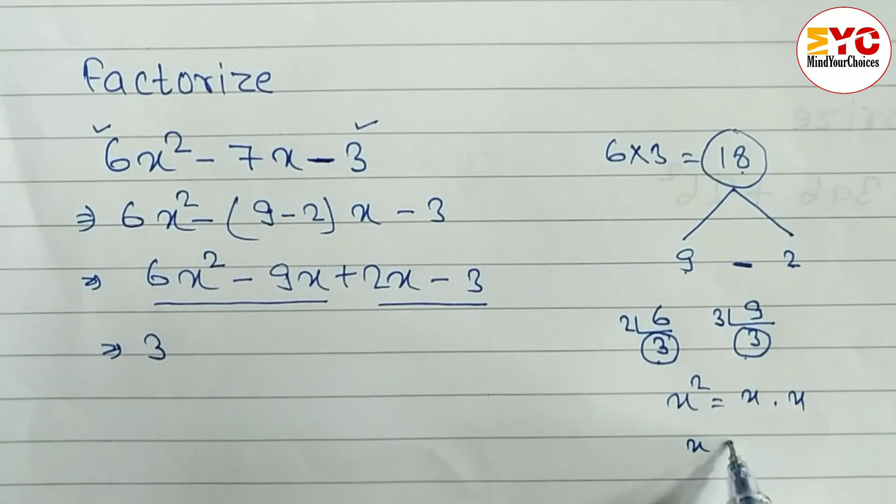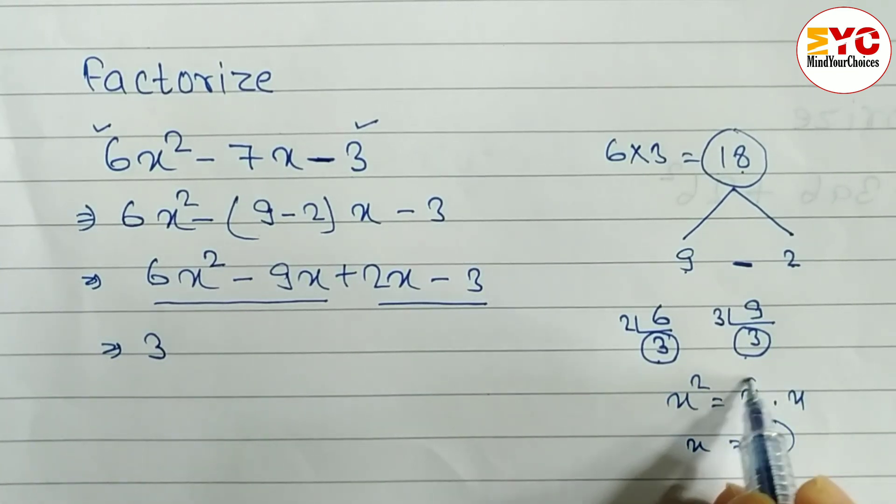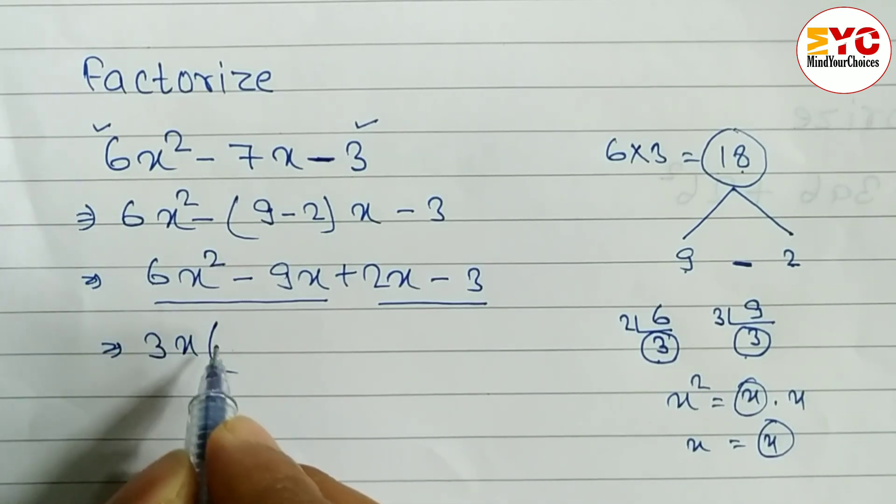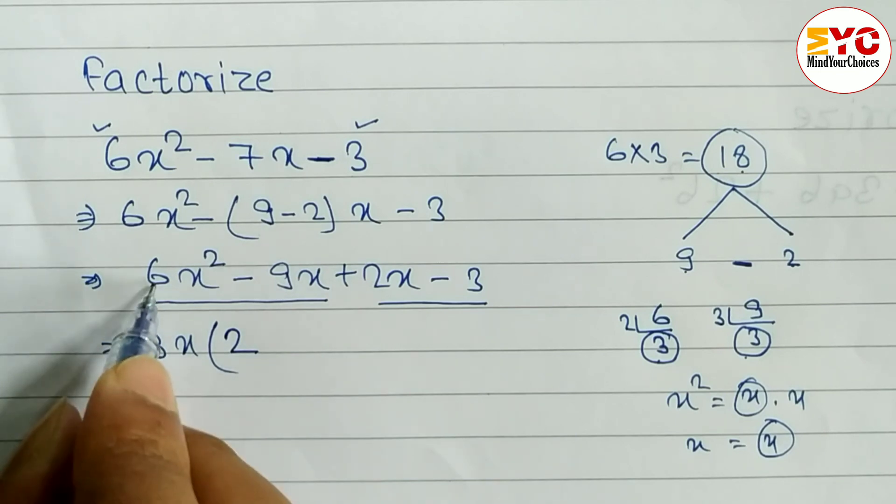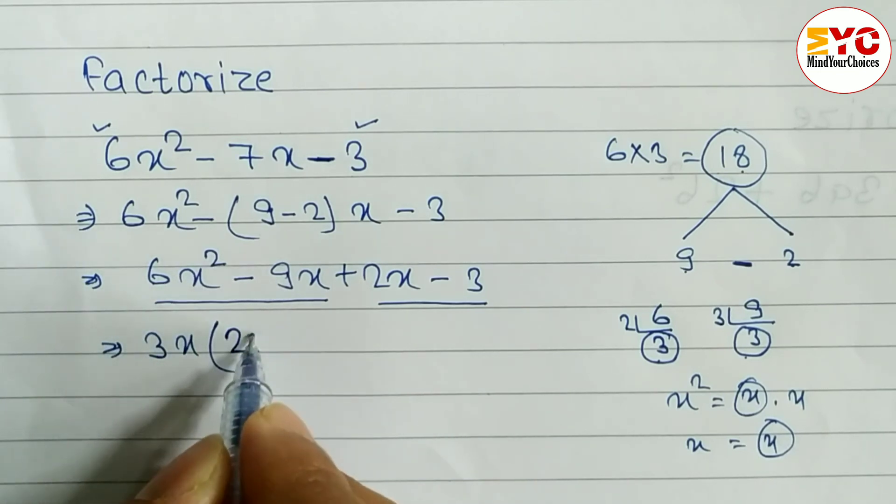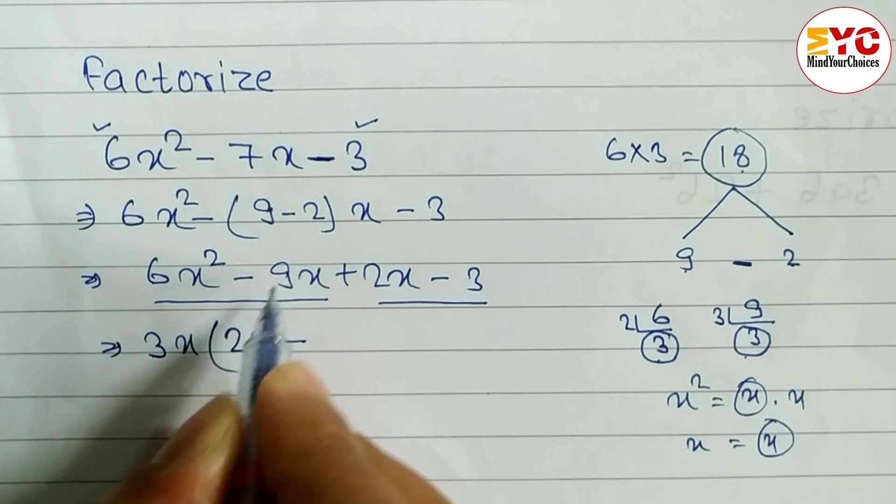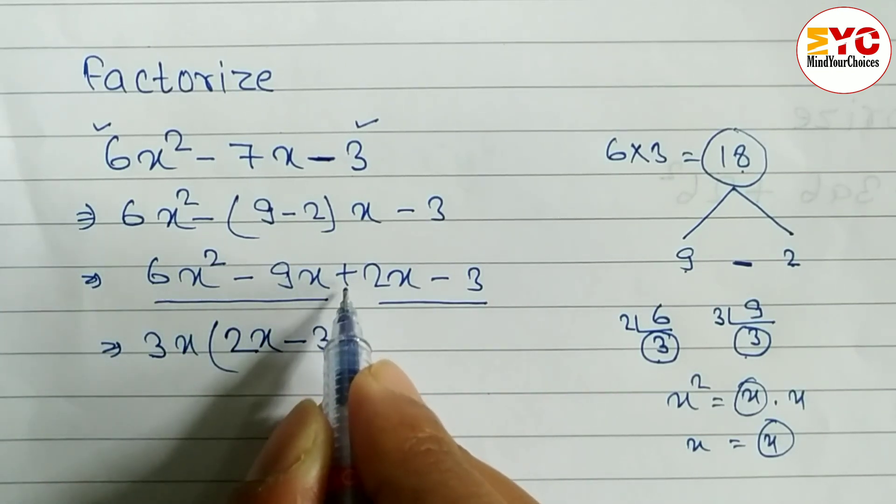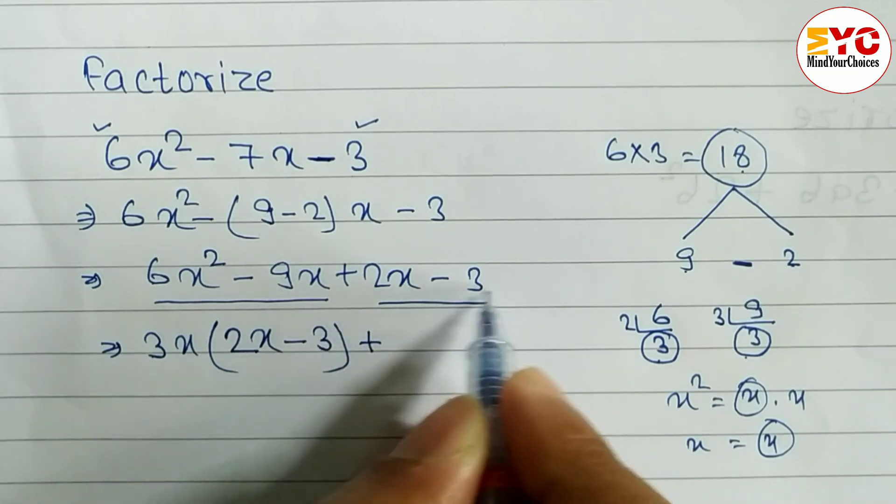What is remaining? 3 into which number will be 6? 3 × 2 = 6. From x², x is common, so remaining is x. Minus 3 into which number will be 9? 3 × 3 = 9. This x is already common here.